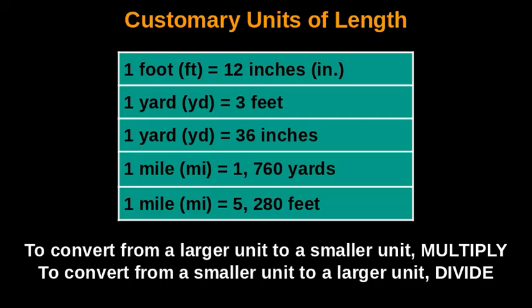These are the customary units of length and their relationships: one foot equals 12 inches, one yard equals three feet, one yard also equals 36 inches, one mile equals 1760 yards, and one mile equals 5280 feet.